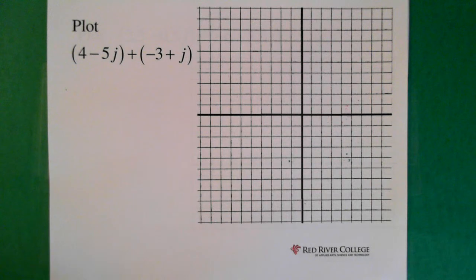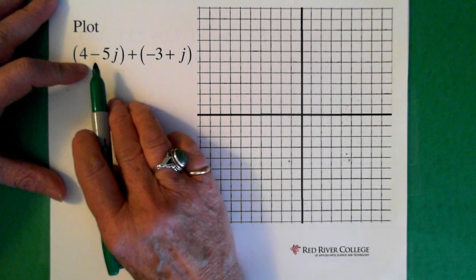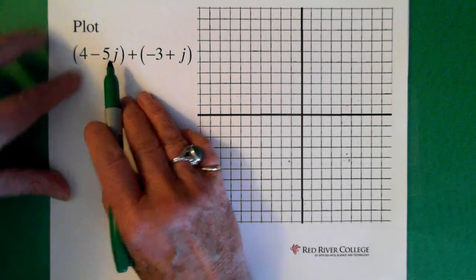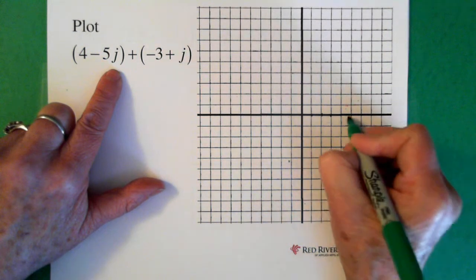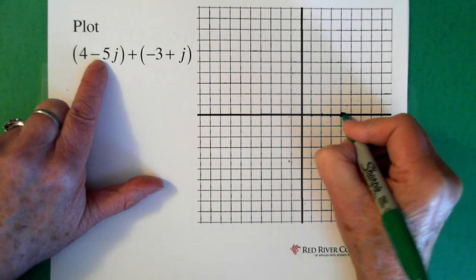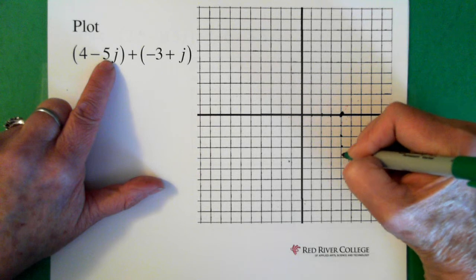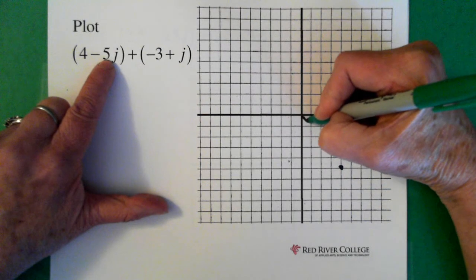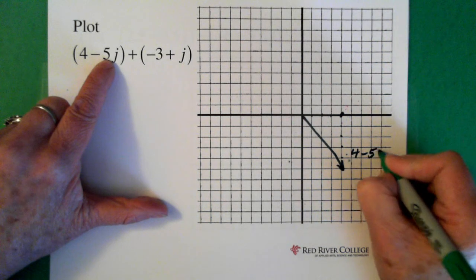Now if you want, you can pause the video and try this one — I'm going to walk through it anyway. Alright, so here we have two complex numbers added together. The 4 minus 5j: we're going to plot that — 1, 2, 3, 4 on the real axis, so to this point. And then minus 5j, which takes us down: 1, 2, 3, 4, 5 — down to this point. So our vector is here. This is the 4 minus 5j.